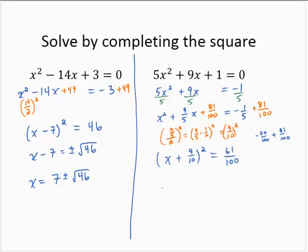Applying the square root property, x plus 9 tenths is equal to the positive or negative square root of 61 over 100.